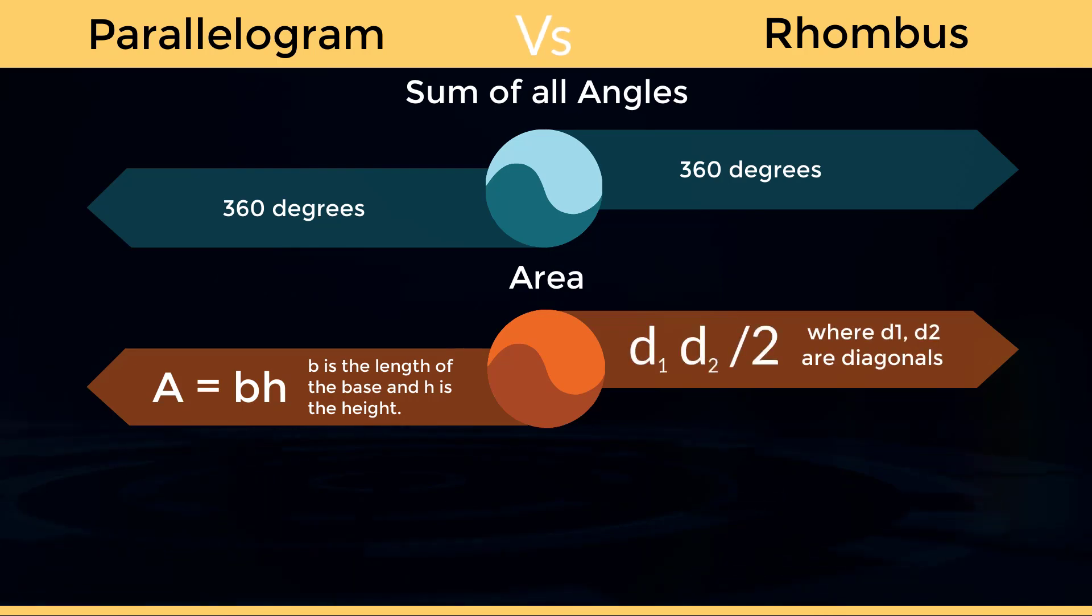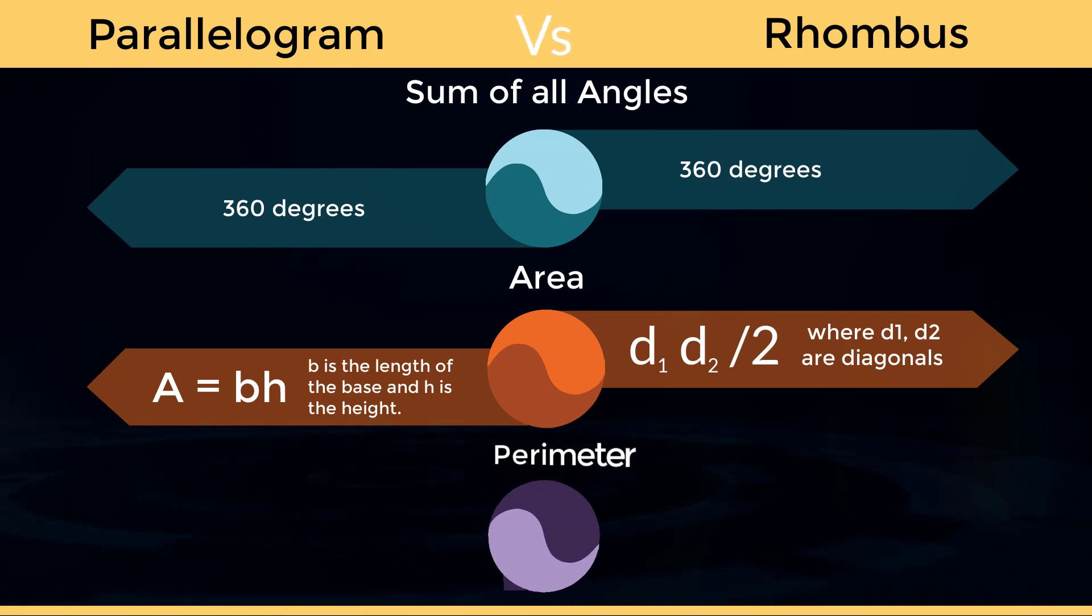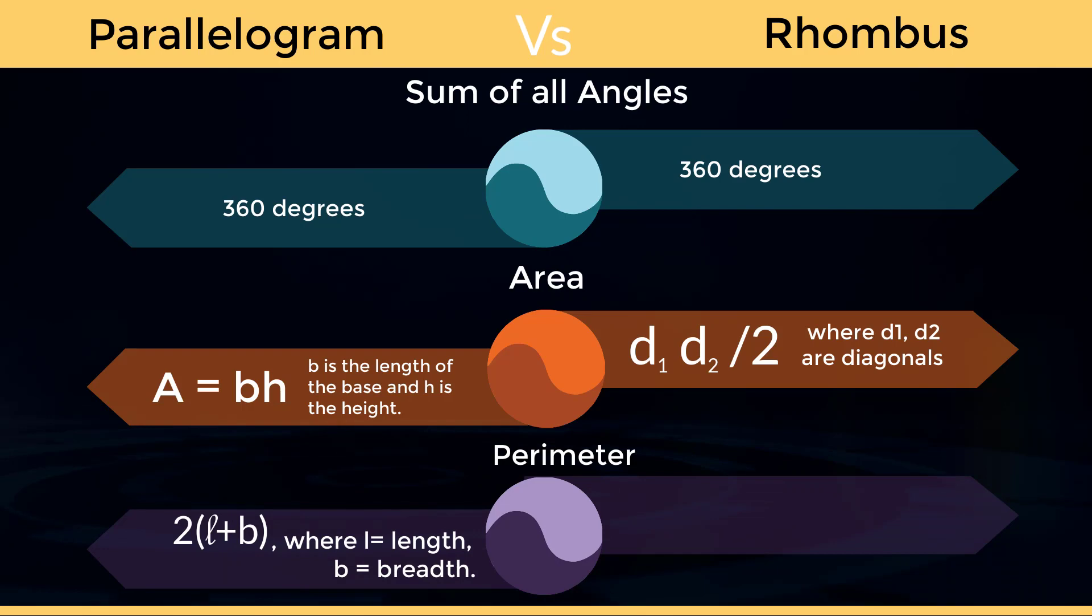Area of rhombus: d1 times d2 divided by 2, where d1 and d2 are diagonals. Perimeter of parallelogram: 2 times (l plus b), where l equals length and b equals breadth. Perimeter of rhombus: 4l, where l equals side.